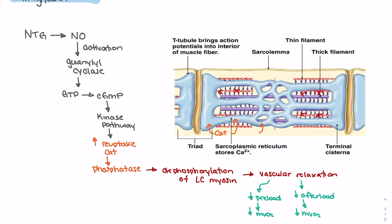Finally, one of the other benefits of nitroglycerin use is that vascular relaxation can occur in the coronary arteries. We can see coronary artery dilation, which in some cases can actually improve myocardial oxygen supply by dilating an artery that is potentially stenotic. Those are the key aspects of nitroglycerin's mechanism of action and how it functions when administered.